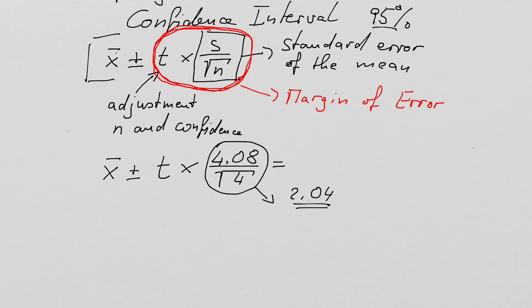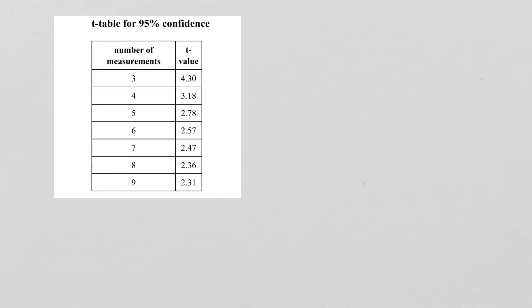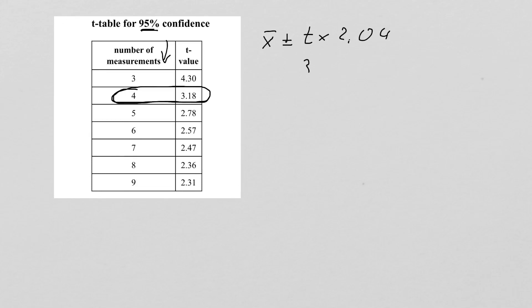Now all we need to do is find t, and for this purpose we can use what is called a t-table. Here is a t-table. It depends on how confident we want to be and the number of measurements. In this case we had 4 measurements, and the corresponding t-value is 3.18. So we have x-bar plus or minus t times 2.04, and t is 3.18 times 2.04.